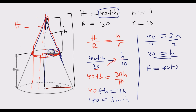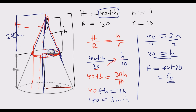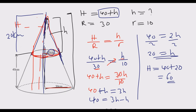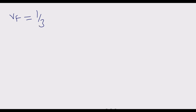The large cone height is 40 + 20 = 60 cm. So from the bottom all the way to the top is 60 cm, and the small cone portion is 20 cm. Once we know the large height H = 60, it is straightforward to find the volume of the frustum even without the direct formula.